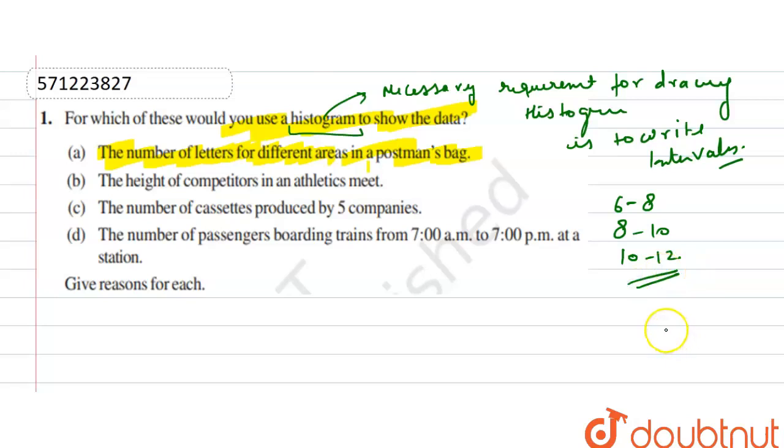In a sentence, if we are able to write in intervals, then we are able to make a histogram. So our first part is the number of letters for different areas in a postman's bag. Different areas cannot make any interval, so we can't make a histogram. So no.